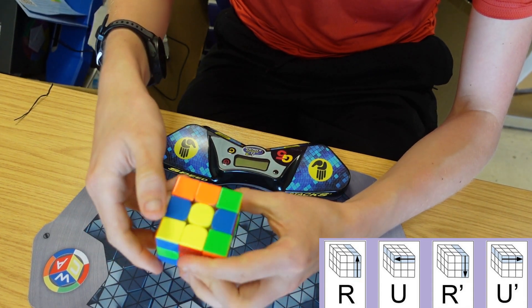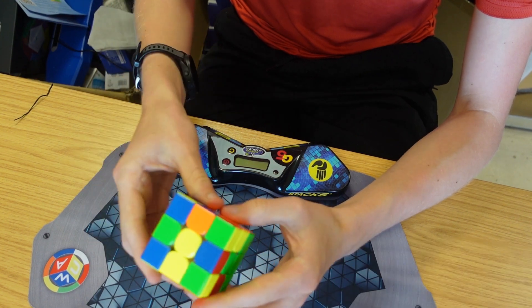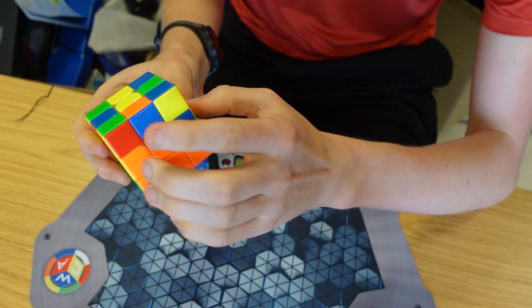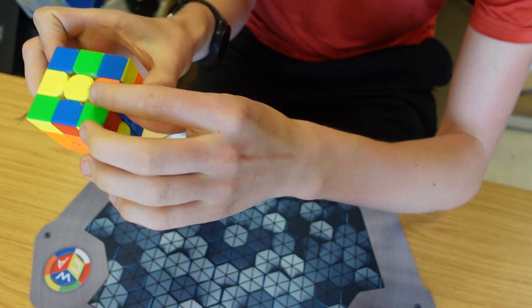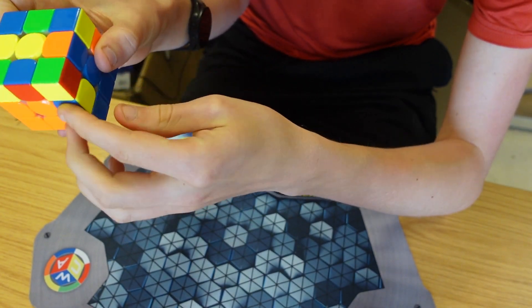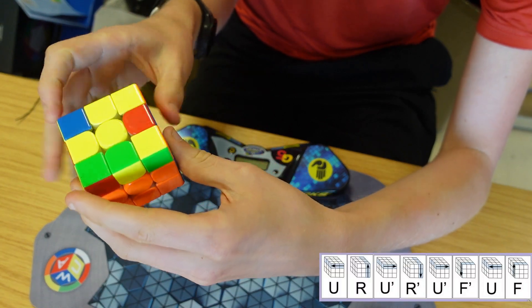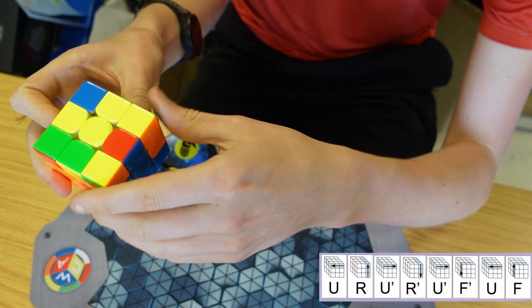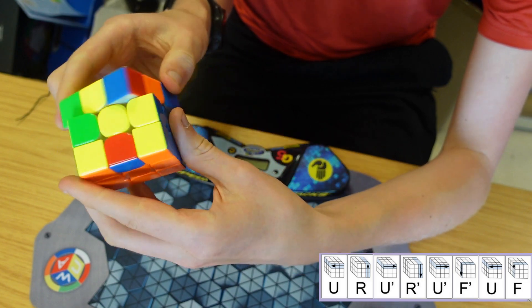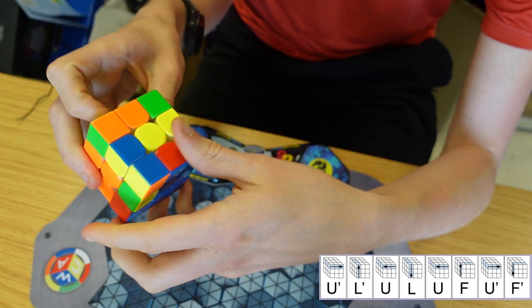Then we move on to the second layer where you need to insert these edges. This one is blue orange and needs to go to the right, so we do that algorithm. Then we have this blue red one, so we need to put that on that side as well.